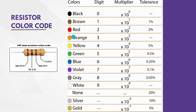It is easy to remember this table by forming a sentence or abbreviating all the colors. One preferable way could be: BB Roy of Great Britain had very good wife, and the last three colors would be none, silver and gold. None means no color, so if there was nothing there it means it has a tolerance of 20%.